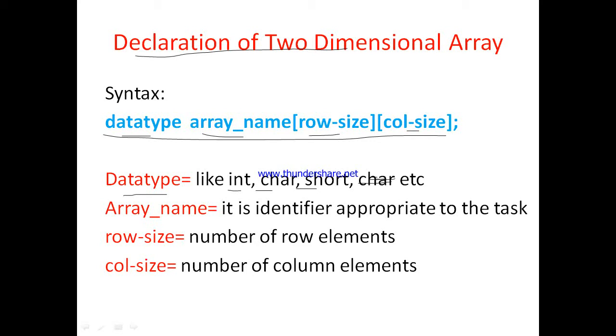Array name is the name of array. It is represented using identifier and that should be appropriate to the task. For example, if array is storing the roll number, the name should be like roll number. Row size represents the number of rows present in the array. Column size represents the number of columns present in the array.